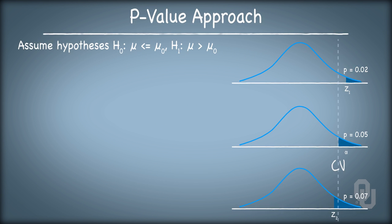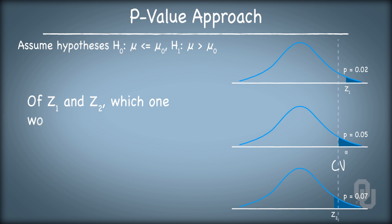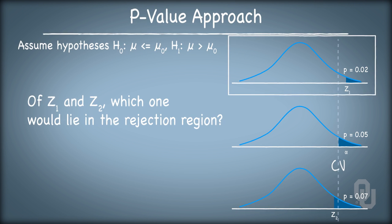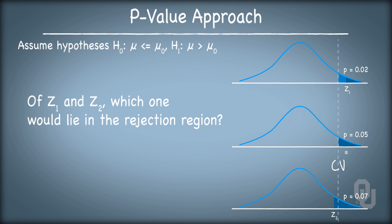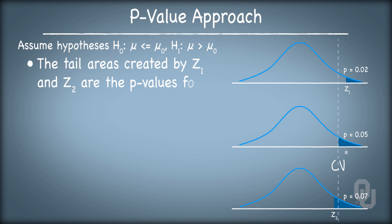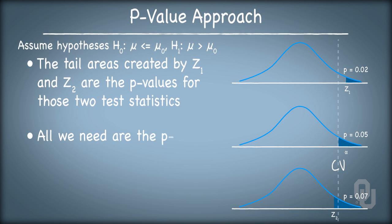Let's take a look at three different values on the z-axis with three different upper tail areas. Say that c-v defines the rejection region — that is, c-v is the critical value — and the area in the tail, or alpha, is 0.05. Now say that z-one lies to the right of the critical value and has a tail area of 0.02, and z-two lies to the left of the critical value with a tail area of 0.07. Naturally, z-one would lie in the rejection region. But we don't need the critical value — we could just look at the area in the tail created by z-one. It's less than alpha of 0.05, so we know that z-one must lie in the rejection region. Likewise, the tail area created by z-two is greater than alpha of 0.05, so z-two must lie in the non-rejection region. The tail areas created by z-one and z-two are the p-values for those test statistics.